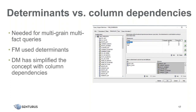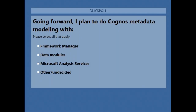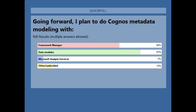There's a whole ton of questions, Pedro. Let's go ahead and look at those. There's also a quick poll about what you plan to do going forward in terms of Cognos metadata modeling — you could select all that apply: Framework Manager, data modules, Microsoft Analysis Services, or something else. The results are in: it's still about two-thirds using Framework Manager, and almost 83% planning to use data modules. Then a smaller percentage of Microsoft Analysis Services and other undecided.